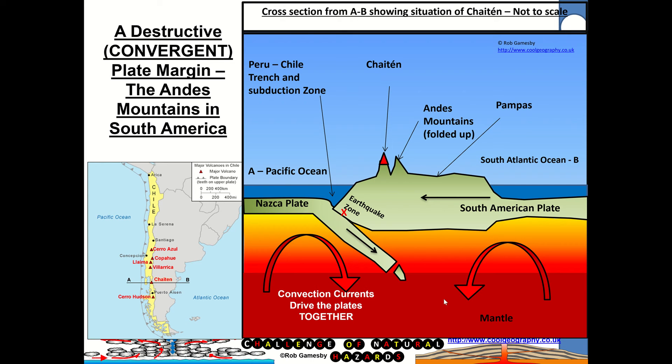Now, because the Nazca plate is oceanic and is denser, it subducts down beneath the continental plate, and the continental plate folds up to create these mountains, the Andes Mountains, on the western side of South America. Now, as that oceanic plate sinks down, bits of it melt under pressure and because of the heat of the Earth's interior, and that magma can rise up to create volcanoes like Chaiten in Chile. So we've got volcanoes right the way along the Andes Fold Mountains.